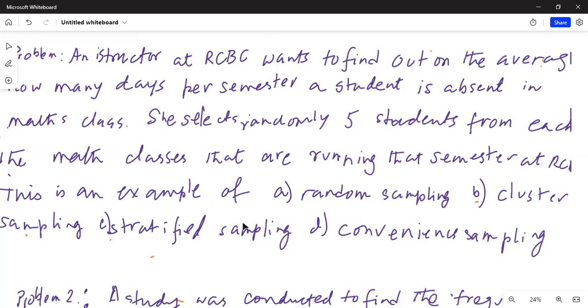So the population of math students fall into all the math classes that are running in that semester. And then you randomly select, she randomly selected five students from each of these math classes. So this is an example of stratified sampling.